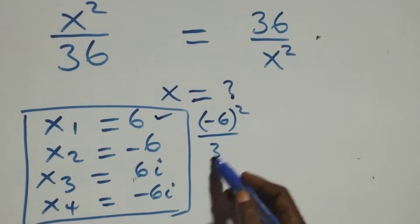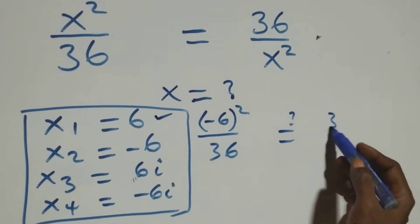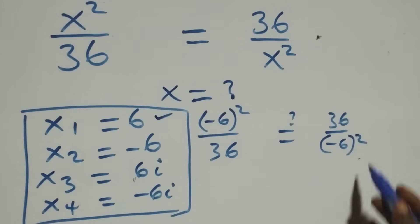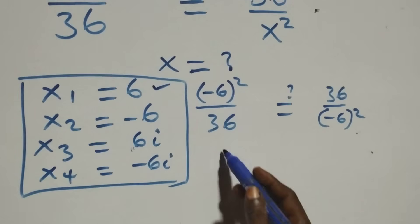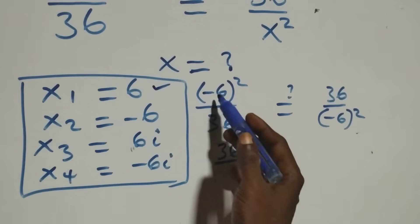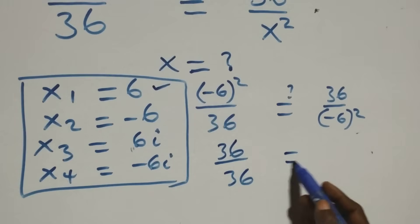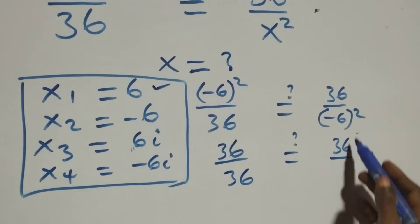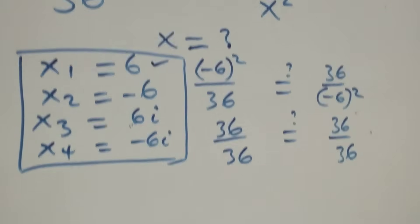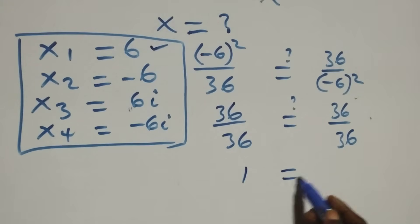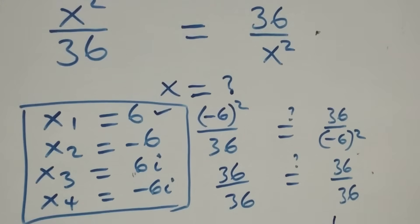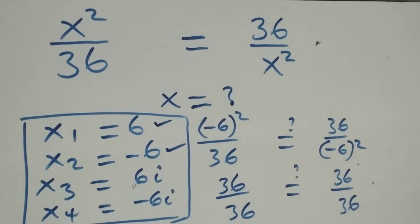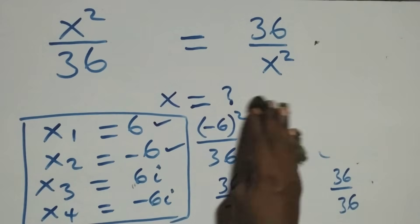For x equals minus 6, substituting gives (minus 6)² over 36, equal to 36 over (minus 6)². Since squaring makes the negative positive, (minus 6)² = 36. So we get 36 over 36 equals 36 over 36, which is 1 equals 1. Left-hand side equals right-hand side, so minus 6 also satisfies the equation.